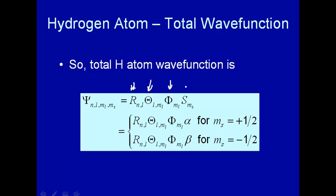Tacked on to that is the spin wave function, which will give you either spin up or spin down for an electron, plus one-half or minus one-half. So, this is the total hydrogen atom wave function, consisting of spatial part and spin part.